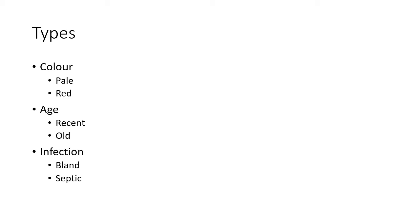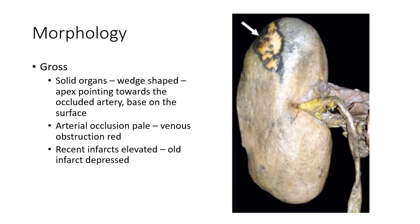Grossly, in compact or solid organs, the area of infarction is usually wedge-shaped with the apex pointing towards the occluded artery. You can see this in the picture showing an infarcted kidney, where the base is on the surface of the organ. Infarcts due to arterial occlusion are usually pale, while those due to venous obstruction are usually red and hemorrhagic.